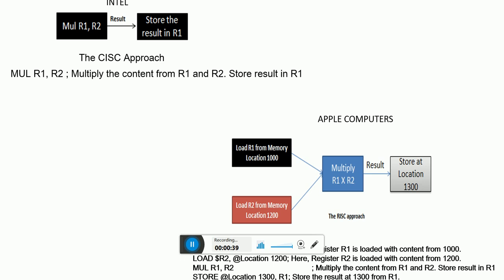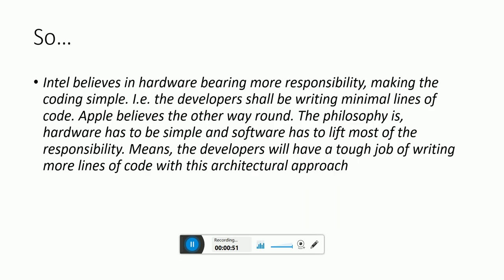Now, let's take Apple computers and Intel computers — Intel who are manufacturing chips, the processor. Whenever you take Intel, they strongly believe that the programmer's life has to be very simple. Whenever a developer is using Intel's chip, they want it to be very easy — the developer should write a minimal number of lines of code, making the hardware do most of the things. But Apple believes the other way around: the hardware should actually be simple, and the software has to lift more responsibility — developers who write the code should write more lines. So if you write minimal lines, that's Intel's architecture; if you are willing to write more lines where hardware responsibility is lowered, you go with Apple's architecture. Both are still in existence, both compete with each other, and both are approaches we have been following for a long time.